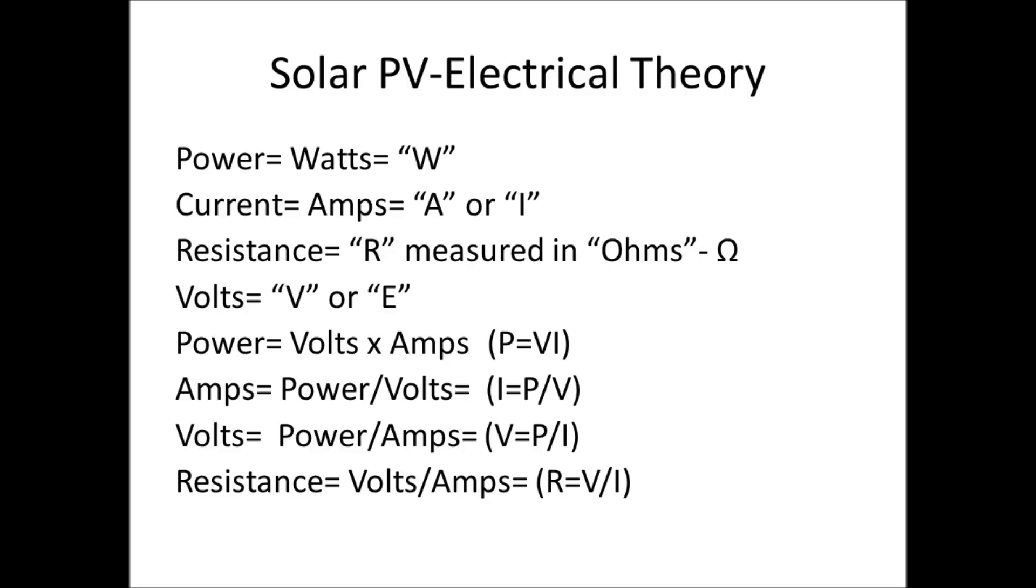Resistance, which is an R, is measured in ohms. Volts is just that, volts with a capital V, or you'll also see it with an E in calculations. The meat and potatoes, the ones you're using all the time, are going to be power equals volts times amps, so P equals V times I.